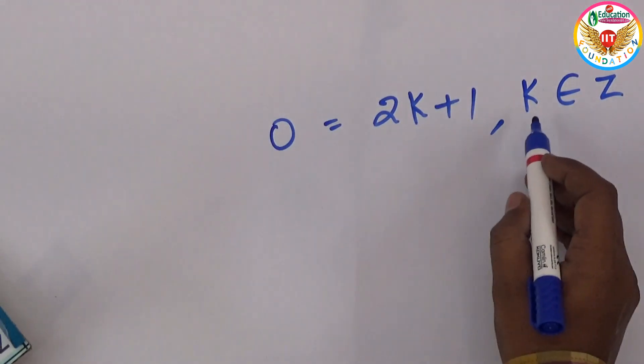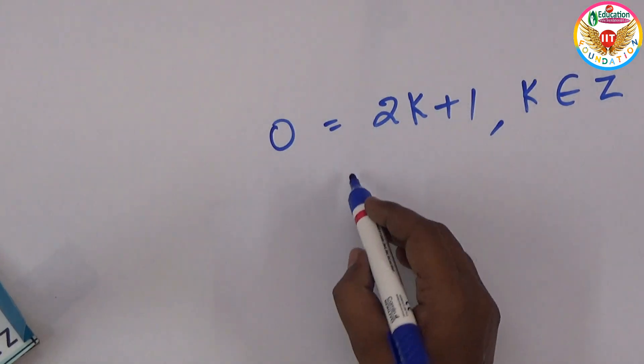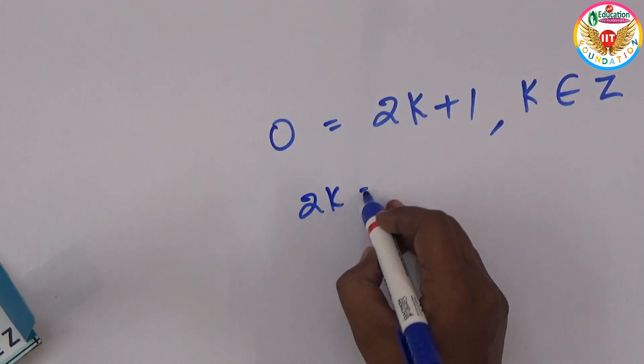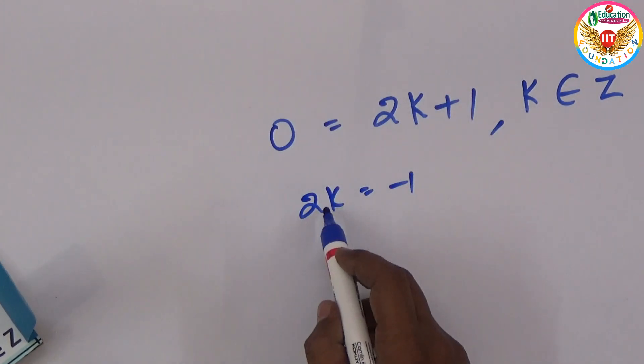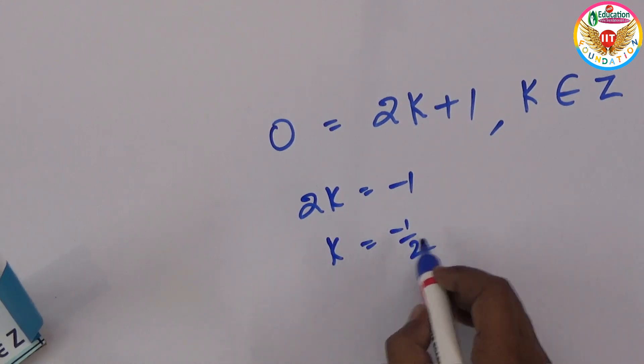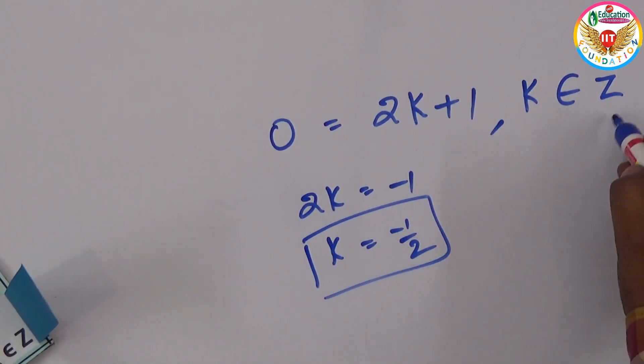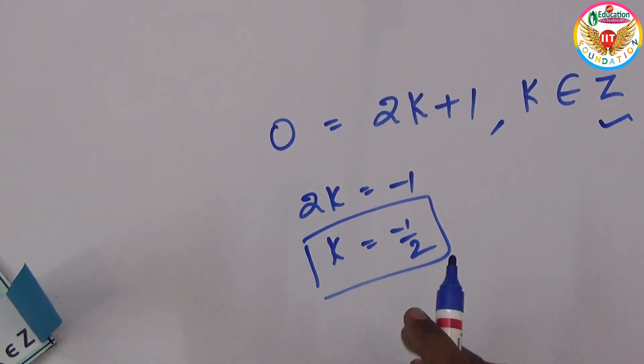Now from this, k should always belong to integers. From this, take minus one. So 2k equals minus one. Zero minus one on the left side. Then from this, k equals minus one divided by two. So here, k I got minus one by two. It is a fraction, but k is actually supposed to be an integer. So this is a contradiction.